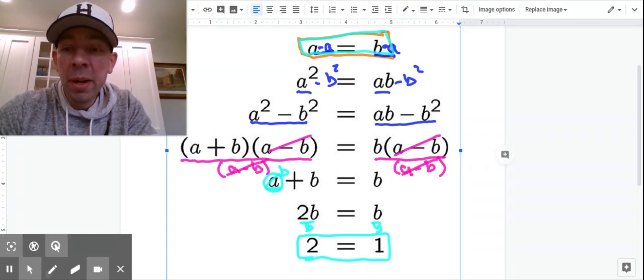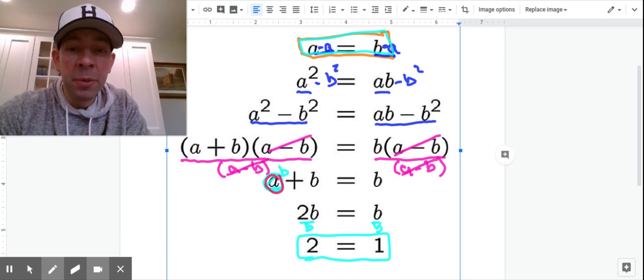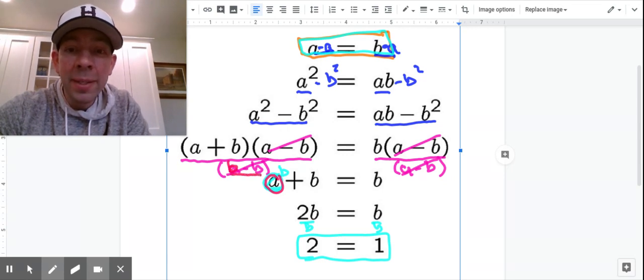So what happens is, do you remember how we said A was equal to B, right? Well, imagine, you remember how we replaced this A with a B and we added them to make B plus B is 2B? Well, do the same thing here. Replace this A with a B. Now, B minus B makes what? Zero.